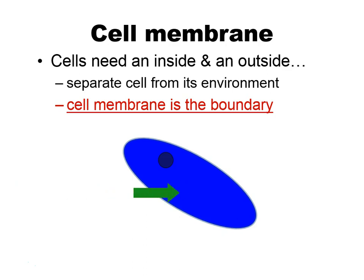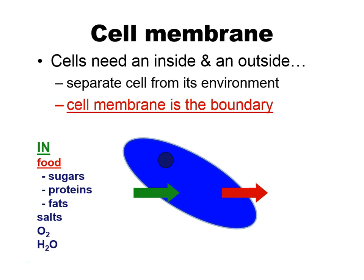It's going to be the boundary between the external outside environment and the internal inside environment. It needs to be able to control what goes in and out. Certain things that need to get into a cell are things like food — so that's sugars, proteins, fats, salts. You also need oxygen and water to get into a cell. To get out of the cell, you're going to need things like waste products that are produced by the cell.